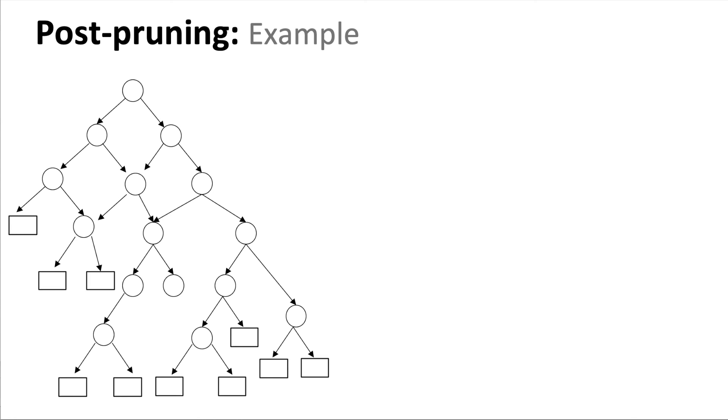So this is an example of post-pruning. Let's say that this is a full decision tree that we built without any restriction. Then we randomly choose any of the internal nodes, for example, that one, and we replace the whole subtree below that node